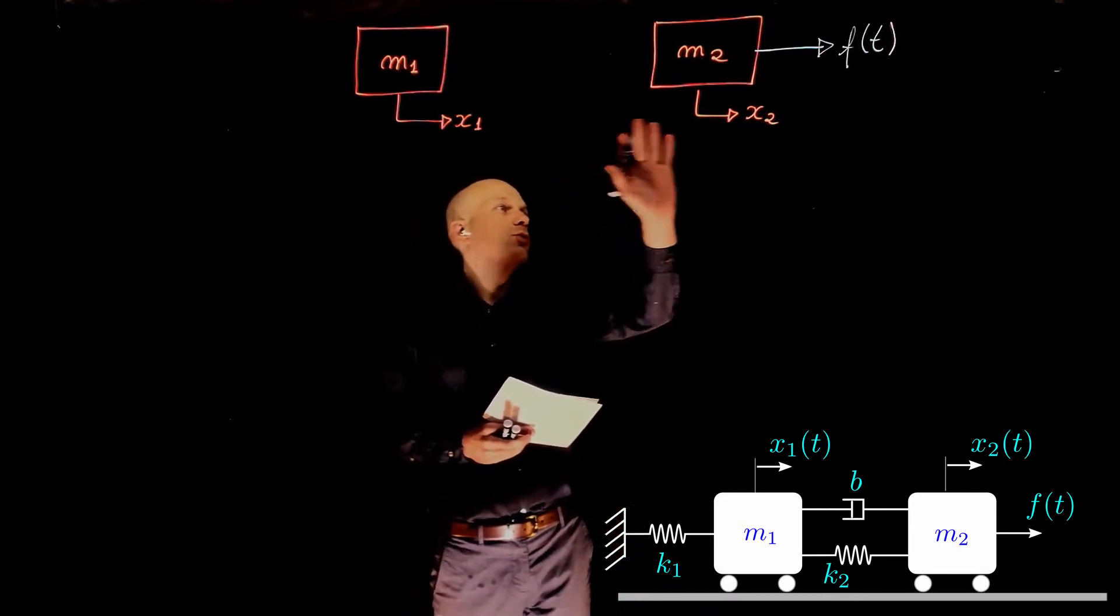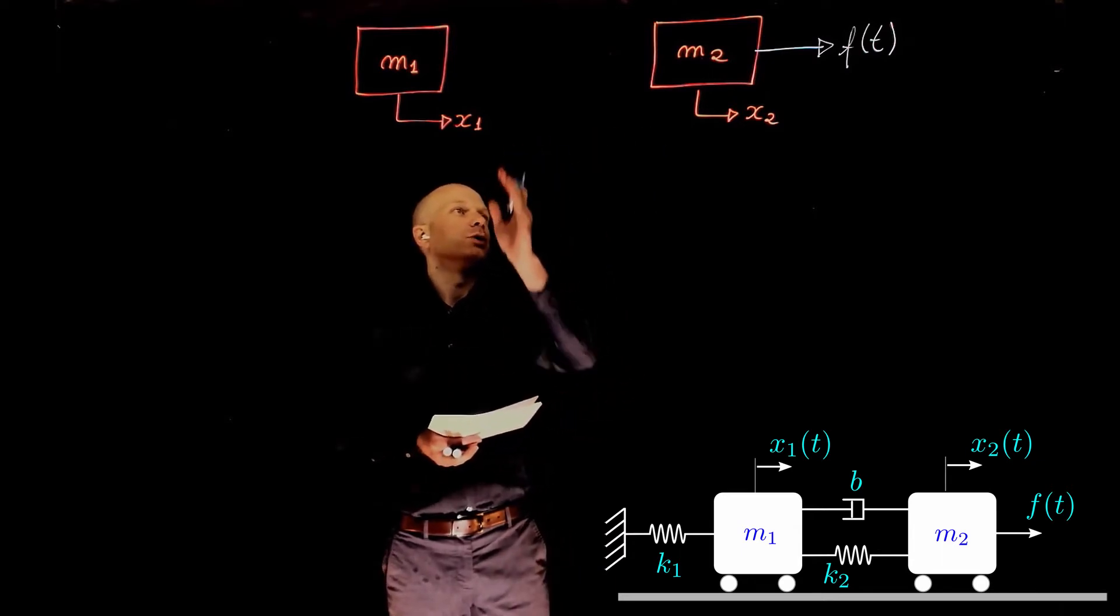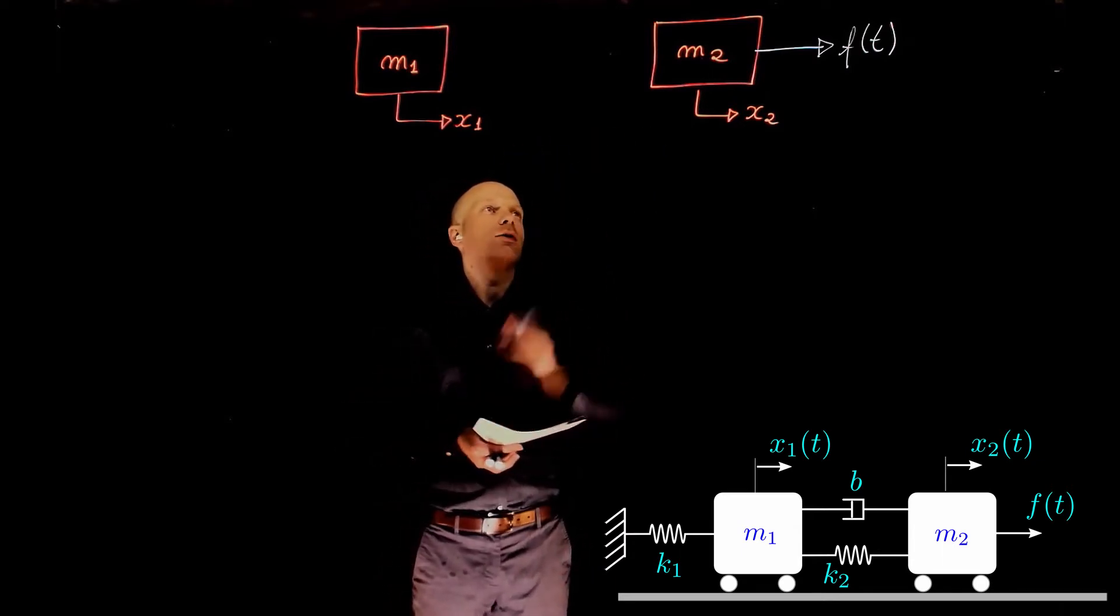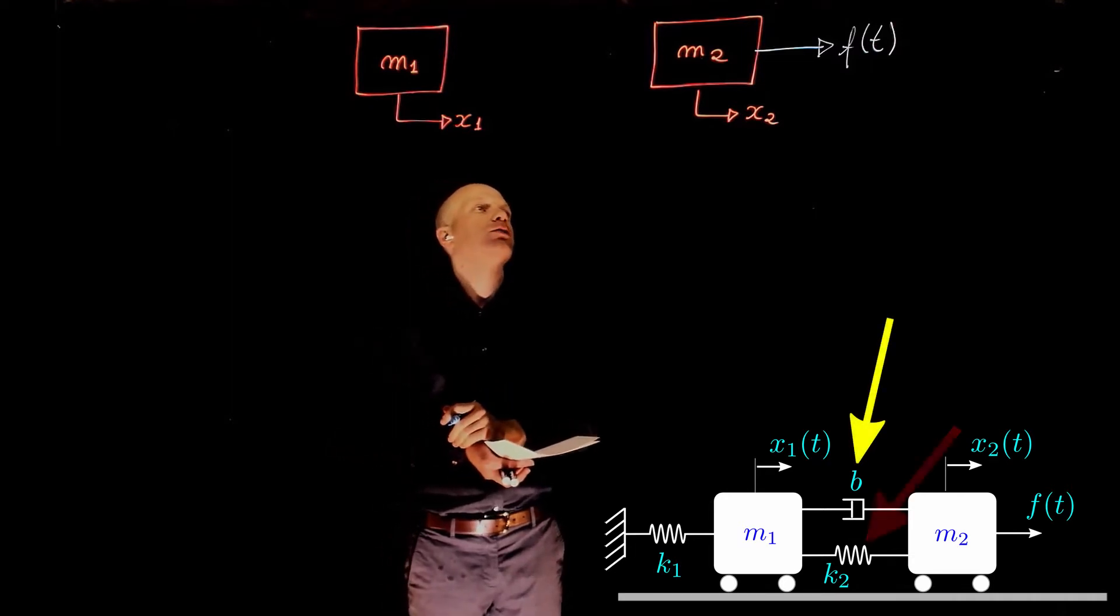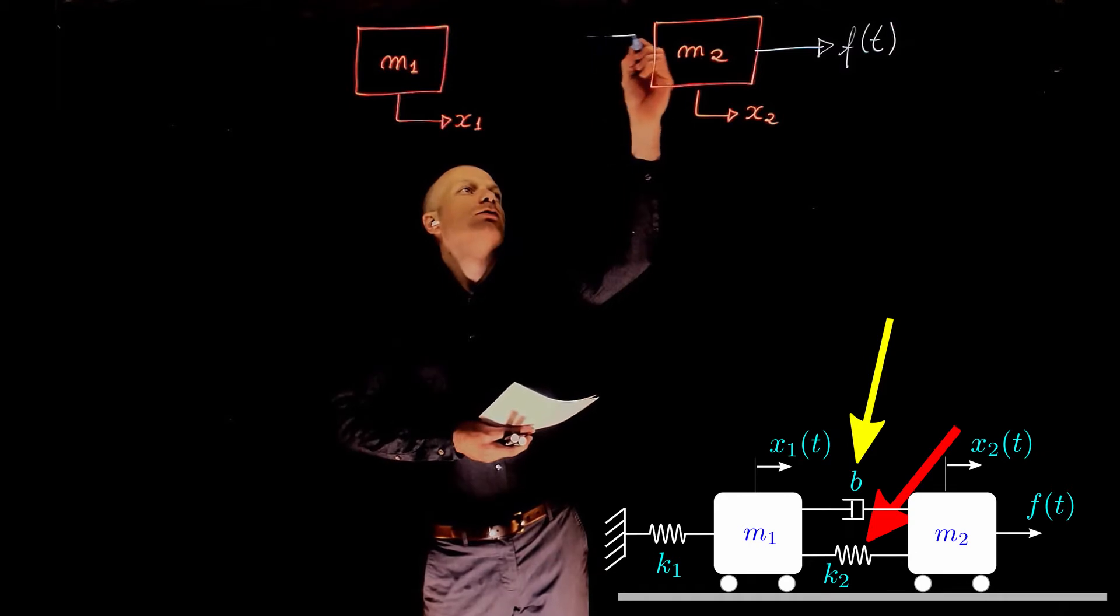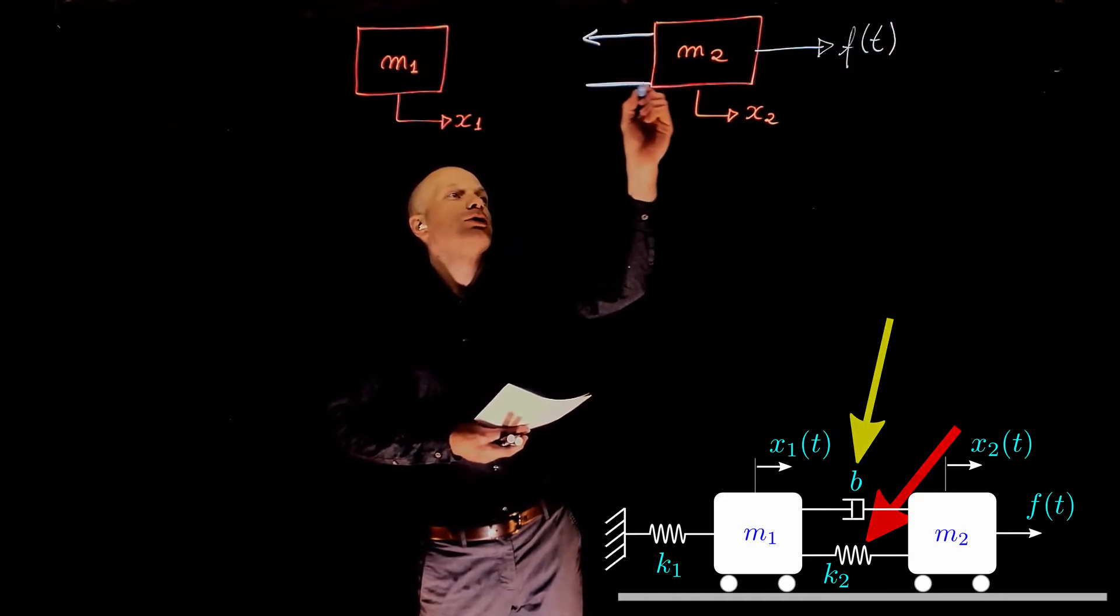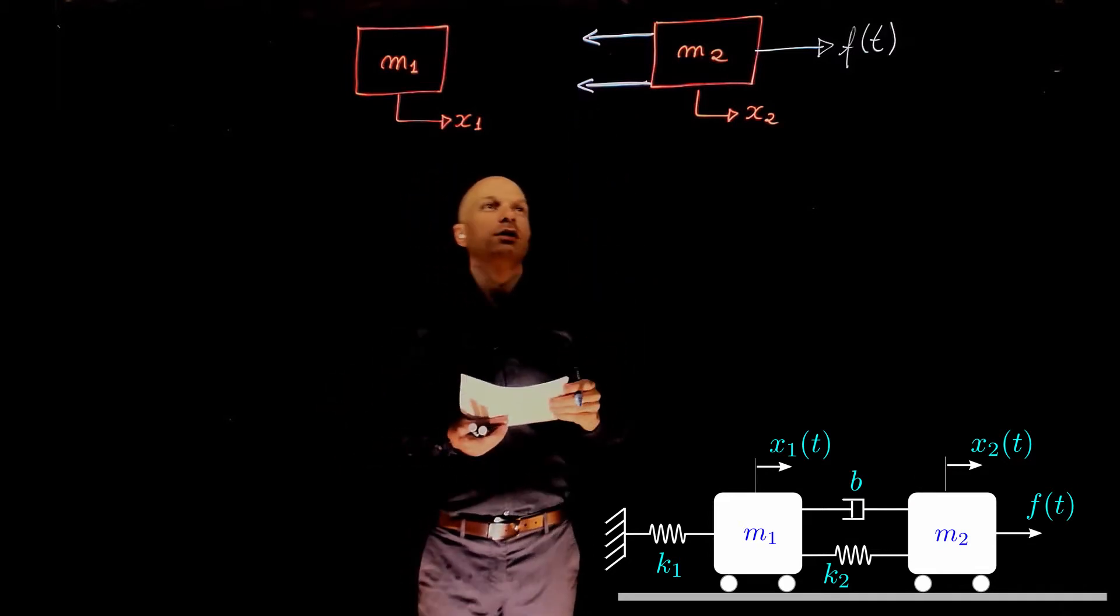As mass M2 moves to the right, there are two forces pulling mass M2 back, and those forces come from the damper and the spring connected between masses M1 and M2. You can now replace those components with the forces that they create.